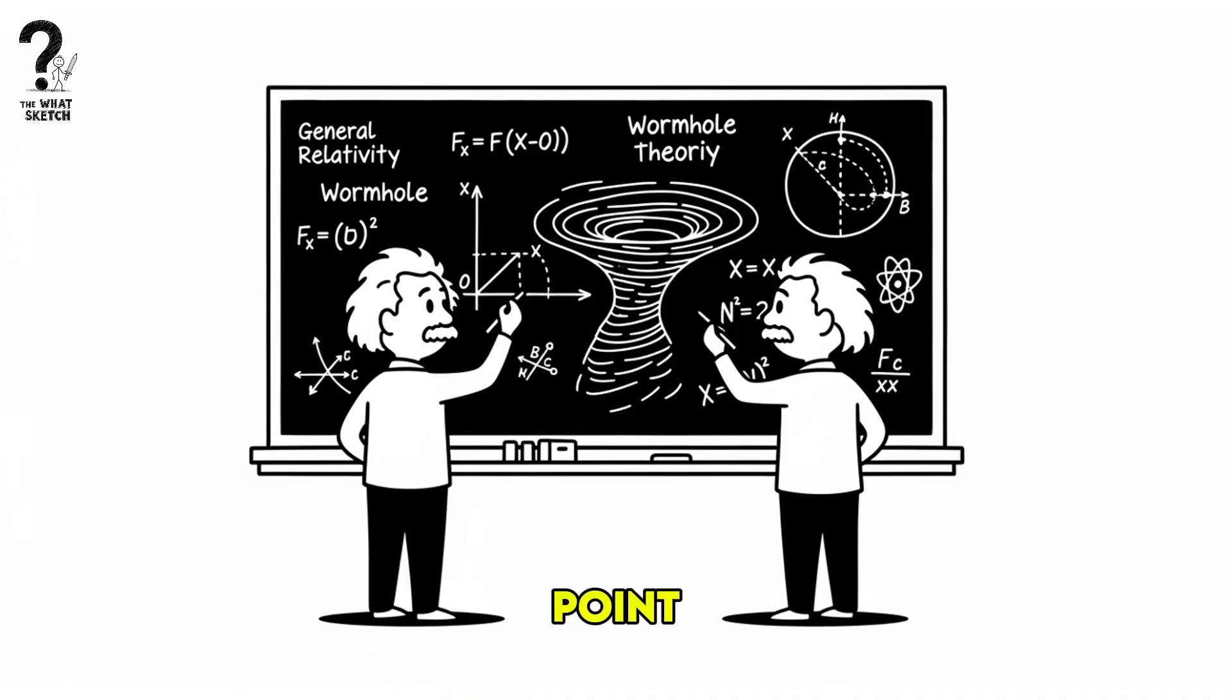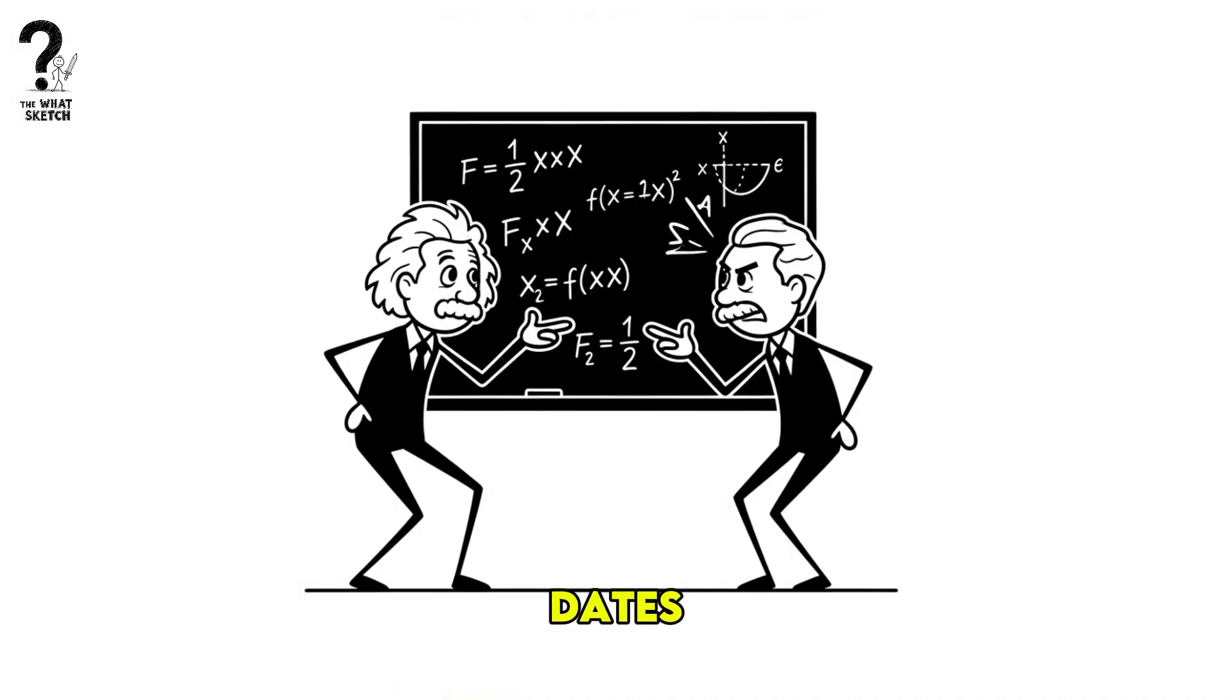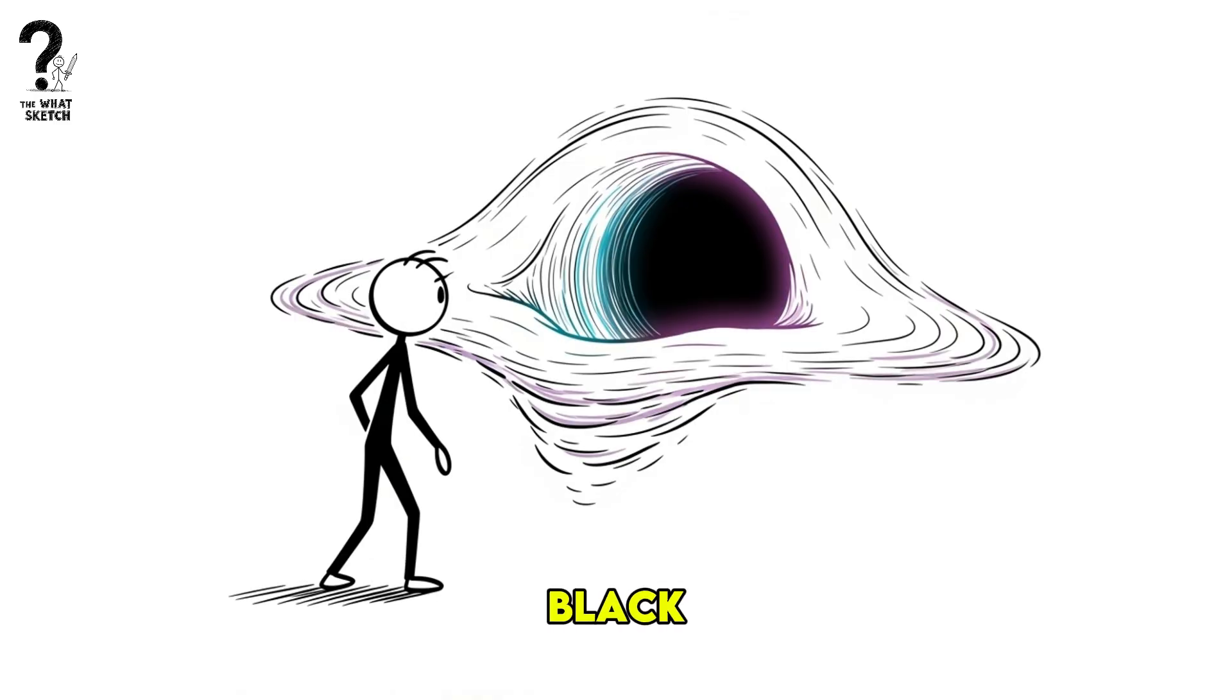What if the singularity isn't a point, but a passage? This idea dates back to 1935 with Einstein and Nathan Rosen, who theorized that a black hole could be one end of a tunnel through spacetime, a wormhole.